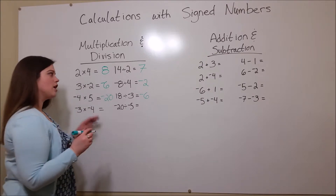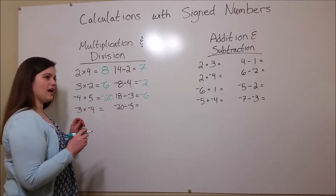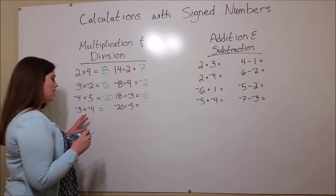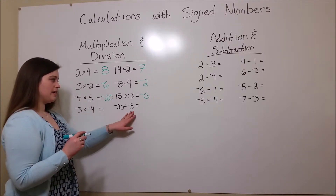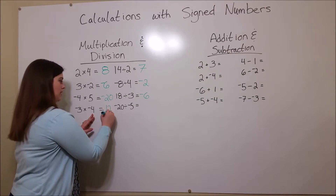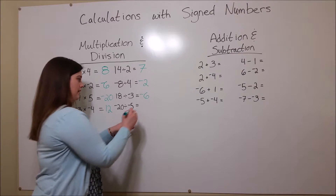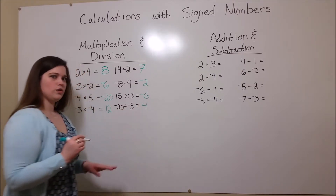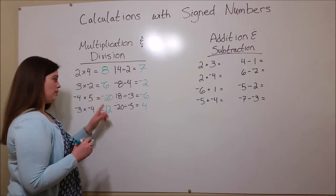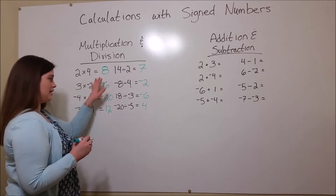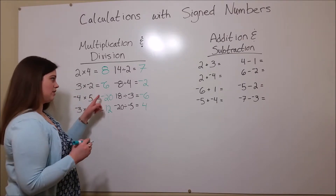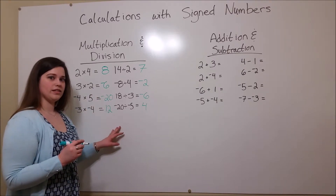So in all of these cases, you have one positive number and one negative number being multiplied or divided, and the answer is negative. It does not matter which of these numbers is positive or negative. Now, when both numbers being multiplied or both numbers being divided are negative, the answer is positive. That is, negative 3 times negative 4 is a positive 12. And negative 20 divided by negative 5 is a positive 4. You can remember this by thinking that whenever the two numbers have the same sign, the answer will be positive — whether it's two positives or two negatives. Whenever the numbers have different signs, the answer will be negative. So that is multiplication and division with signed numbers.